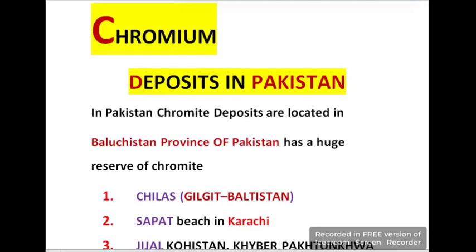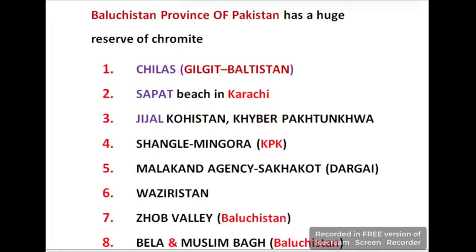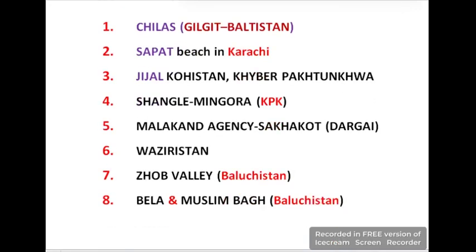In Pakistan, chromium deposits are located in different provinces, but Balochistan province has a huge amount of chromite, which is an ore of chromium. The deposit locations include: Chalas in Gilgit-Baltistan; Sapat Beach located in Karachi; Jijal Kohistan in Khyber Pakhtunkhwa; Shangla Mingora also in KPK; Malakand Agency Saidu Sharif located in Dargai; Waziristan; Zhob Valley in Balochistan; and Bela and Muslim Bagh, also located in Balochistan province.